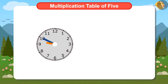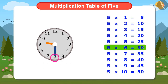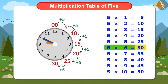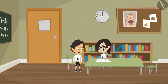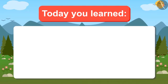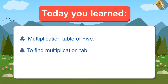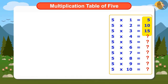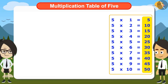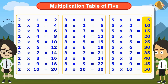Now look at the clock — when the minute hand is at 6, reciting the multiplication table of 5 up to 6 tells us it is 30 minutes. And when it's on 9, it is 45 minutes. This is the right way to read time. Today we have learned the multiplication table of 5, and also learned that to find the multiplication table of large numbers, you can use the multiplication tables of small numbers — like using the tables of 2 and 3 to find the table of 5.